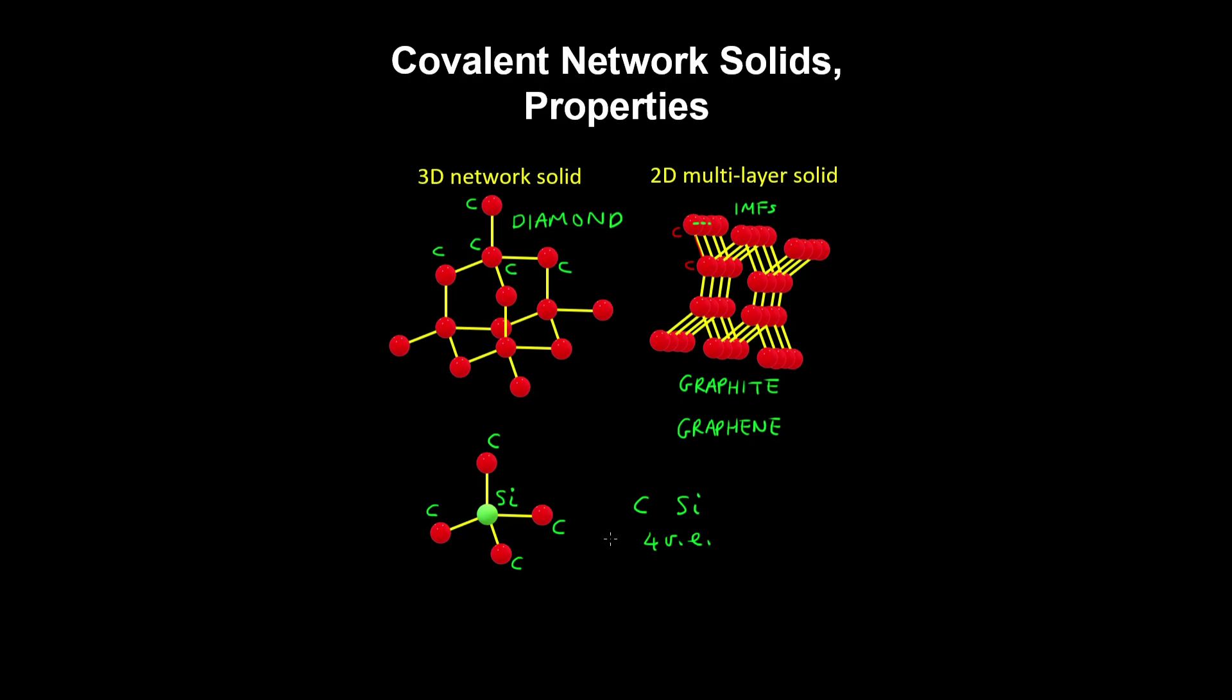So due to the strong covalent interactions, these types of solids have high melting points, and they're rigid and hard because the covalent bond angles are fixed.